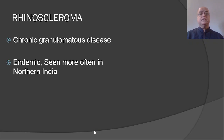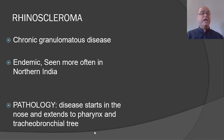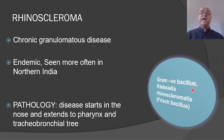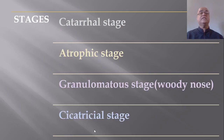Rhinoscleroma is a chronic granulomatous disease under the heading of bacterial granulomas — not to be confused with rhinosclerosis, which is a fungal granuloma. Rhinoscleroma is most commonly seen in the northern part of India. The disease starts in the nose and can extend to the pharynx and tracheobronchial tree. It is caused by a gram-negative bacterium called Klebsiella rhinoscleromatis, also known as Frisch bacillus.